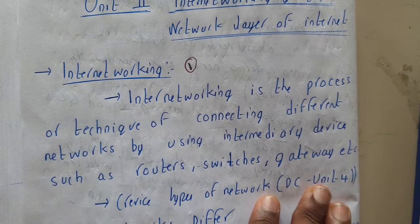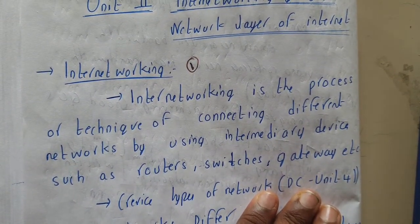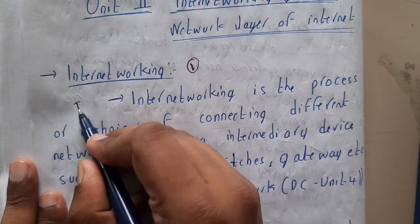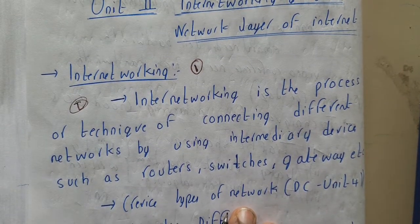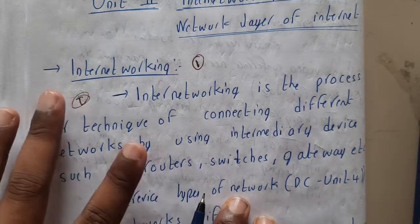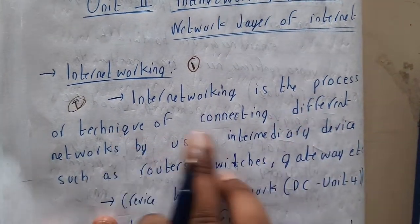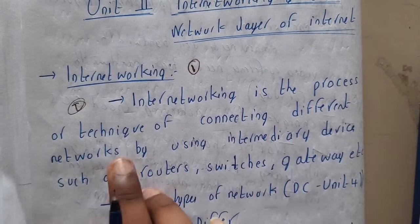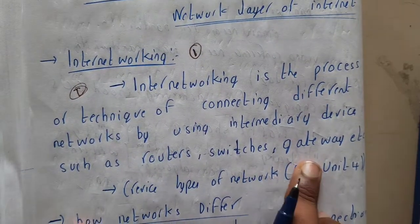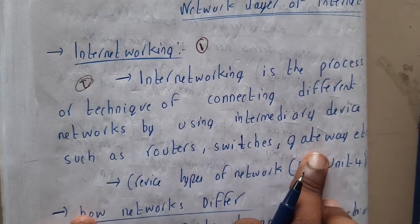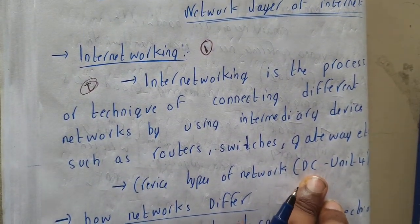Internetworking is nothing but the connection of multiple devices using some intermediate devices. The internet is a connection of multiple devices — a network — where data transfer between them is done. Internetworking is a process or technique of connecting different networks by using intermediate devices such as routers, switches, and gateways.